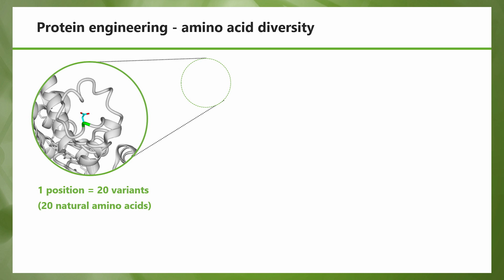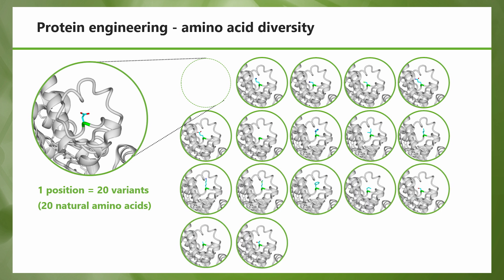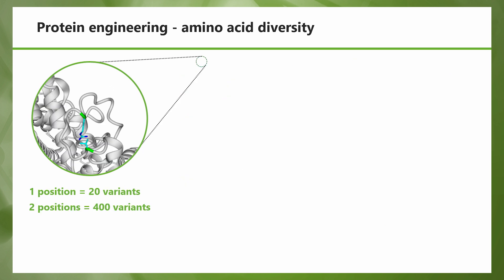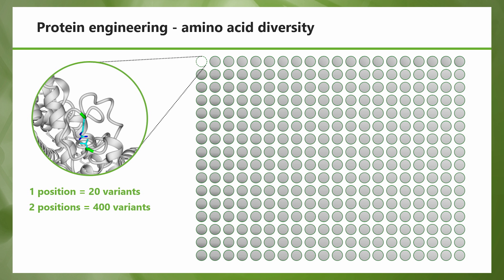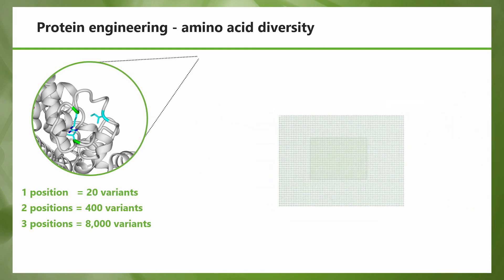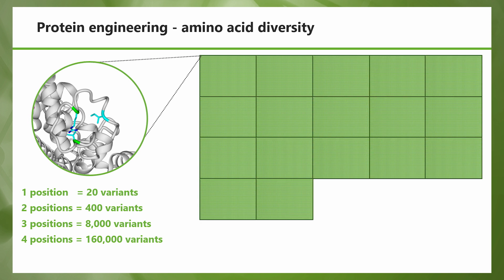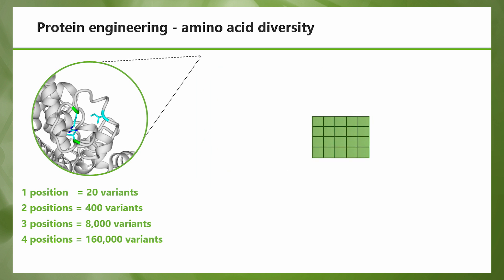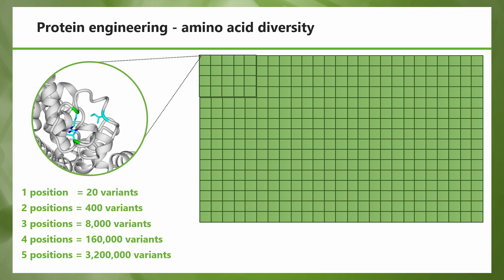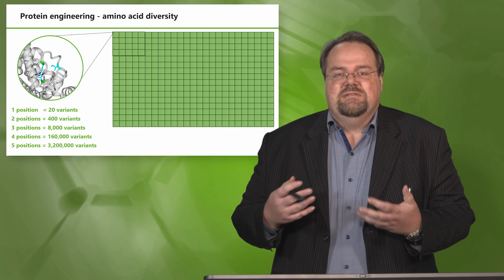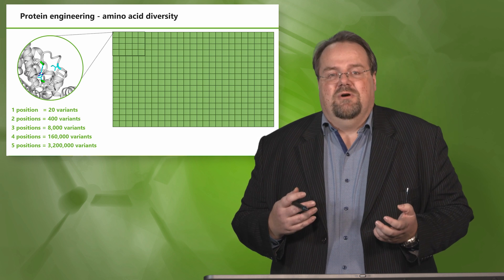These 20 building blocks represent huge diversity. At one position you can put 20 different natural building blocks, giving 20 different protein variants. If you change two positions simultaneously, you can generate 400 different variants. For three positions it's 8,000; four positions, 160,000; and with five positions, you have 3.2 million different variants. A protein or enzyme usually has more than 100 amino acids, and we will address this diversity challenge in the next video.